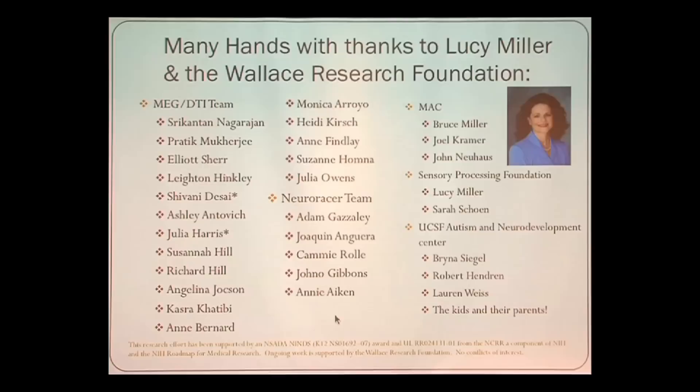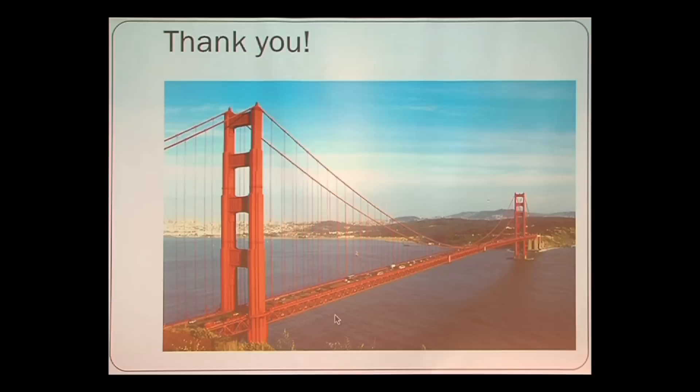We have a large team working on all of our imaging studies — the MEG and diffusion processing group, the NeuroRacer team, the Memory and Aging team, the Sensory Processing team, and the UCSF Autism and Neurodevelopment program. It takes a lot of people to do the work we're doing here at UCSF with autism. There's a lot of hope for understanding auditory processing and its relationship to language impairments in kids on the autism spectrum, and we have novel approaches that kids really seem to be enjoying. Thank you very much.